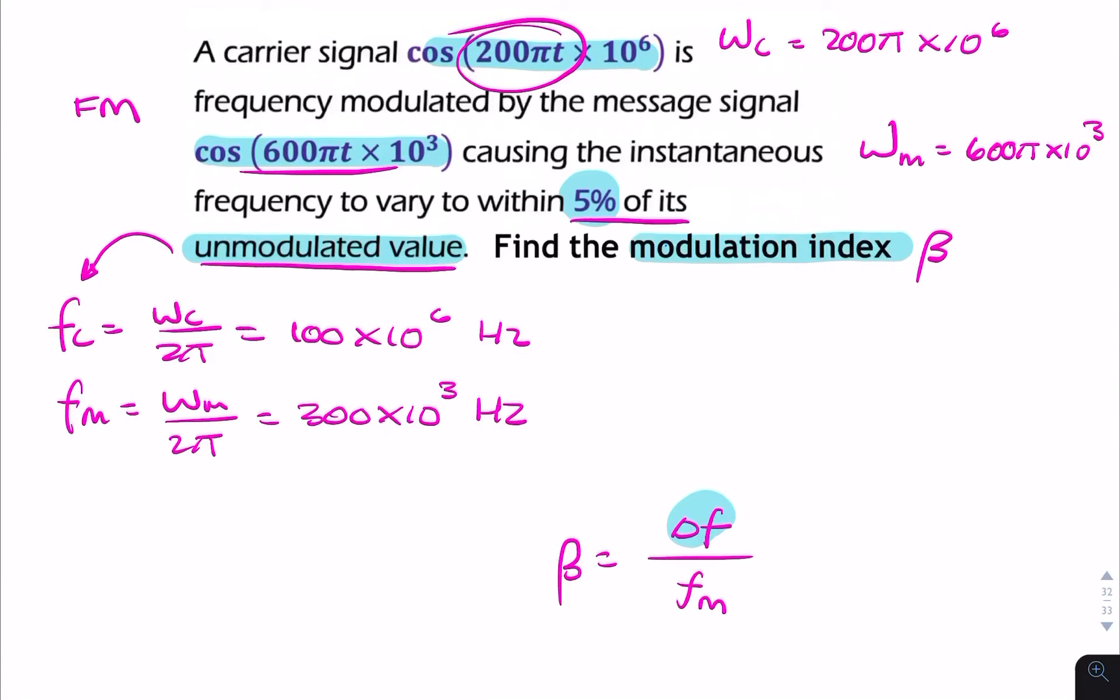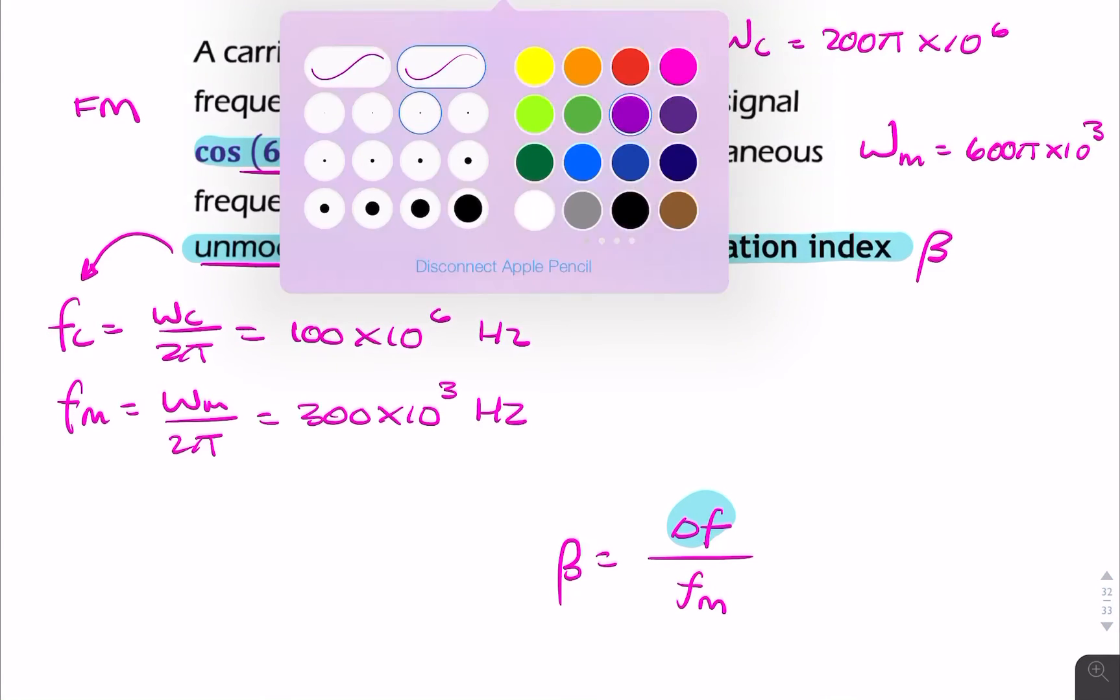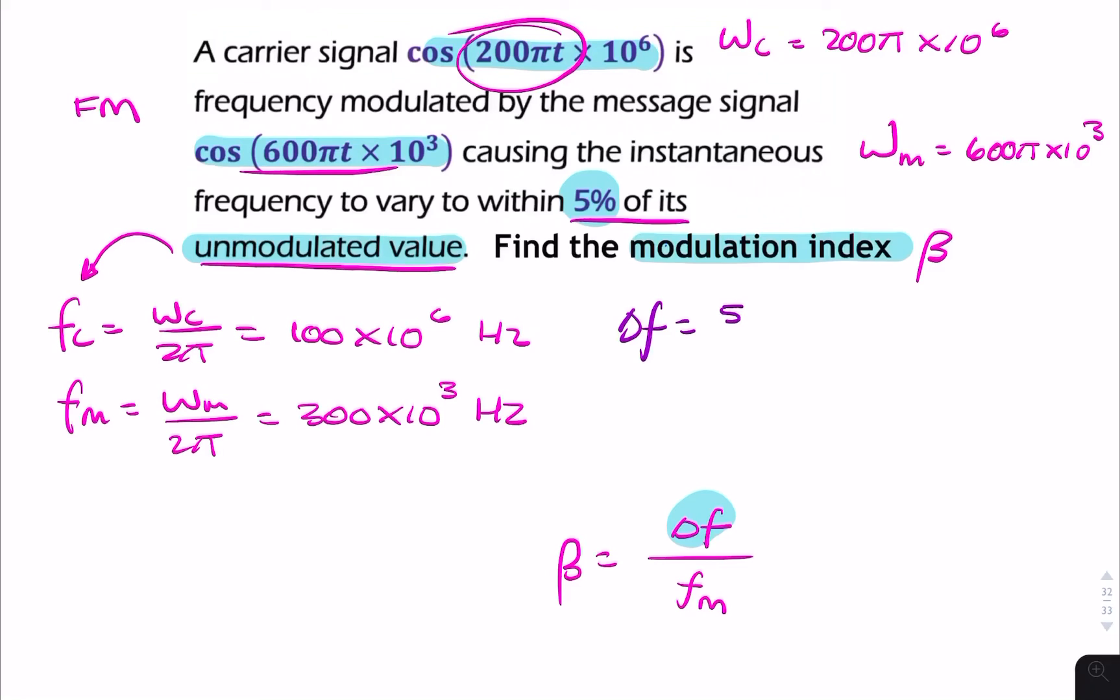So we know that delta F is 5% of Fc. So we can say delta F equals 5% of Fc. So that's 5% of that value, and that's 5 times 10 to the power 6.